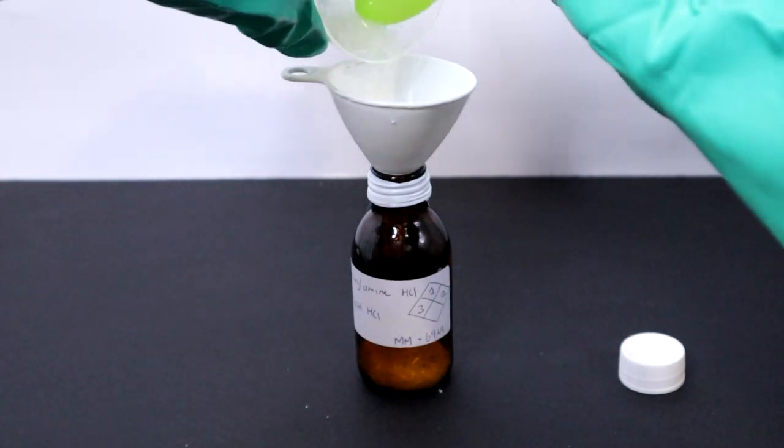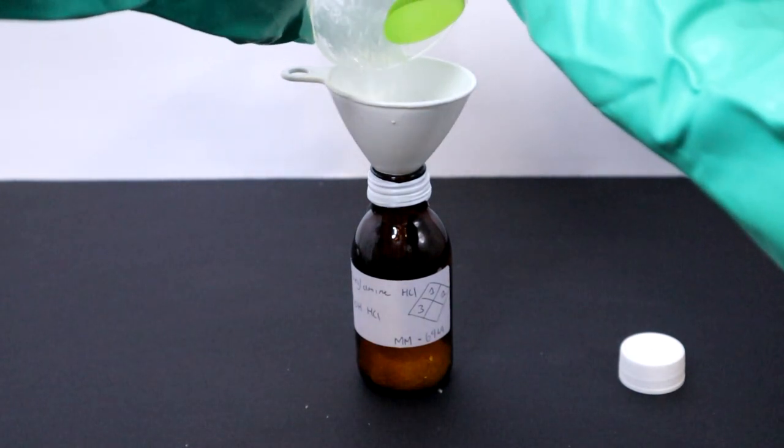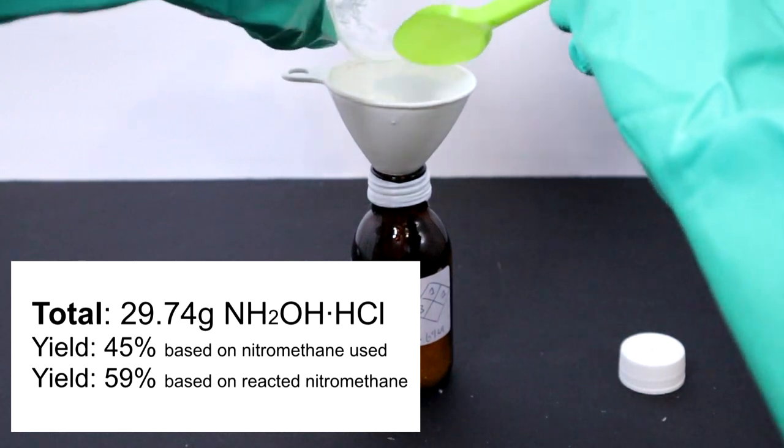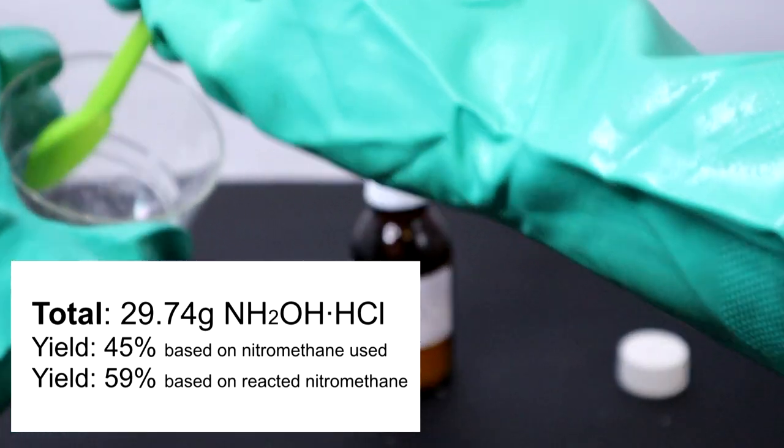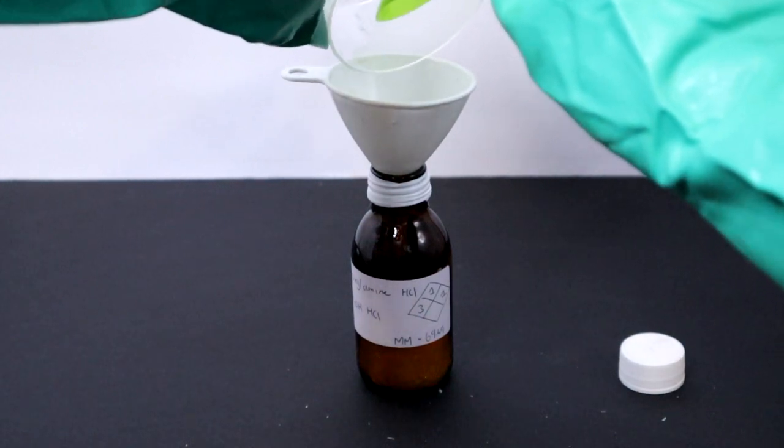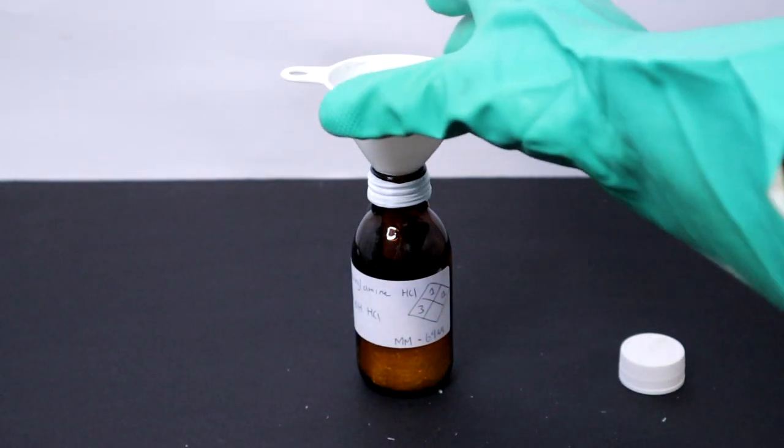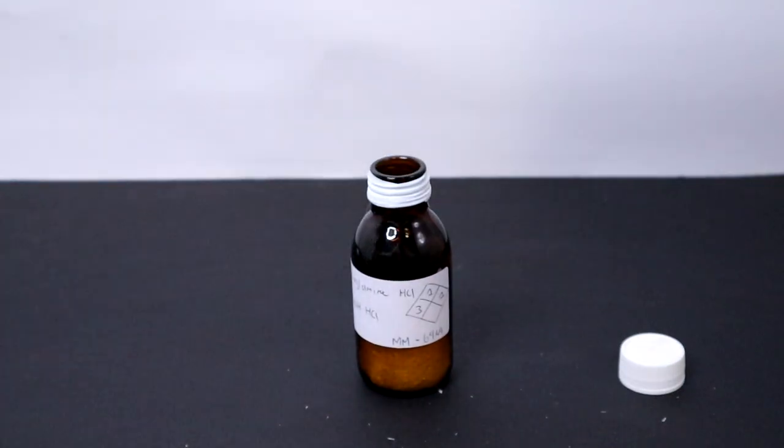The total hydroxylamine hydrochloride obtained from the procedure amounted to 29.74 grams, corresponding to a 45% yield, but a 59% yield based on the nitromethane consumed in the reaction. The recovered nitromethane can definitely be reused in another run if required.